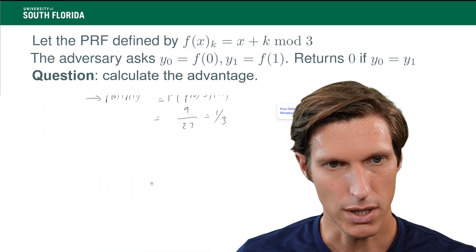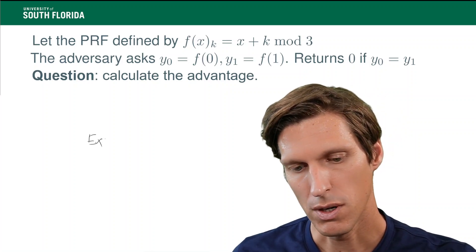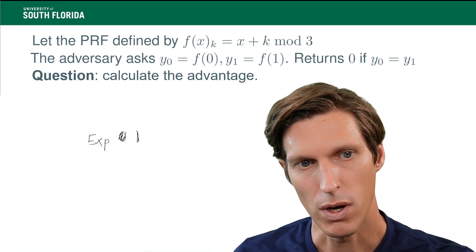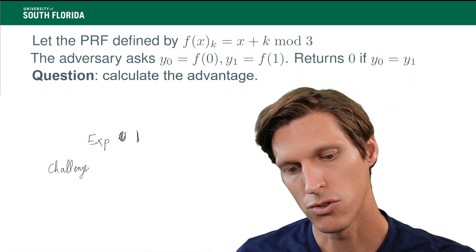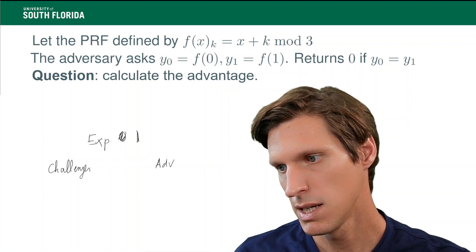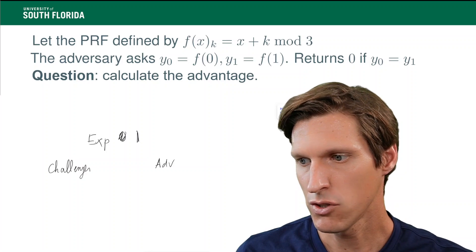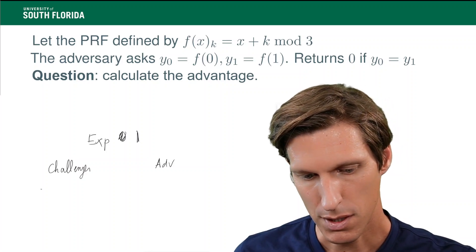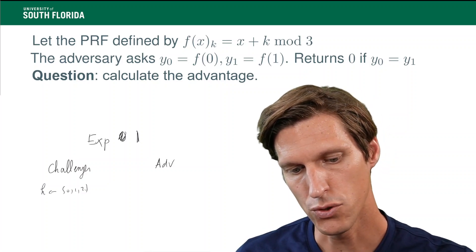Now, I need to calculate what happens to p of w1. So, I need to figure out what happens in experiment 1. So, in experiment 1, my challenger will no longer draw a random function, but instead, my challenger is going to draw a key in {0, 1, 2}.